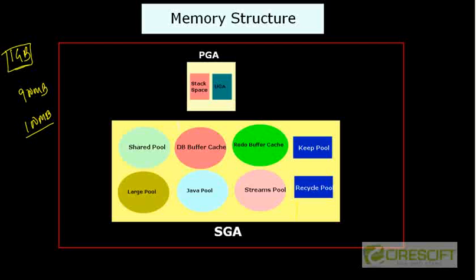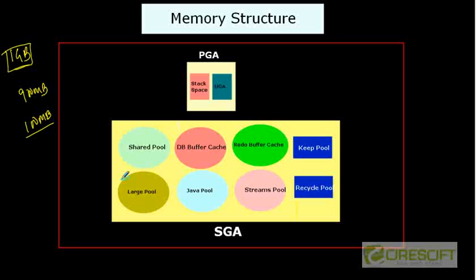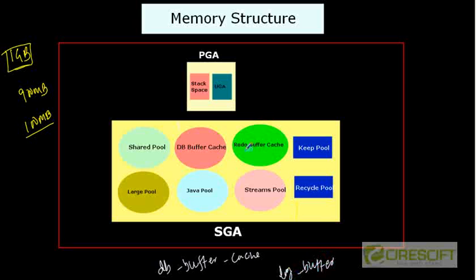There are two ways that you can do that. Starting from Oracle 10G, you can size this thing in two ways — one is called automatic and second one is called manual. In case of manual management, you know the init.ora parameter or spfile.ora parameter, you set what is the size. Let's say DB_buffer_cache is a parameter that determines how big is your buffer cache.